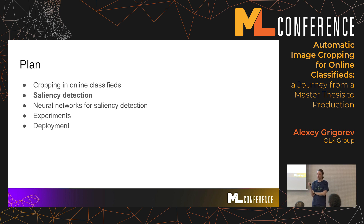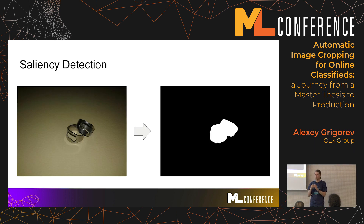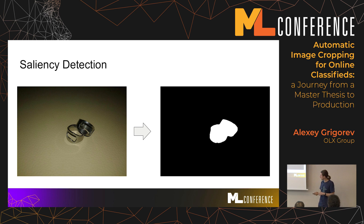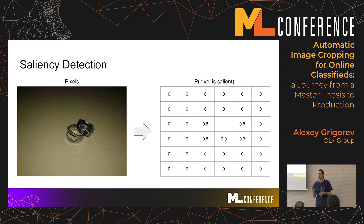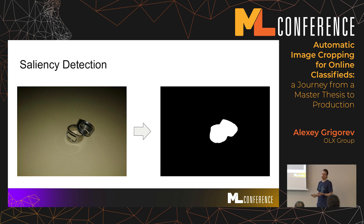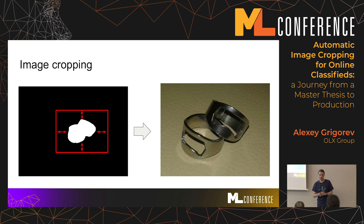To approach this, we can use saliency detection. Saliency is detecting the most important object in the picture — the salient object. In this case, we have engagement rings, and the output of the saliency detection system is a mask — actually, a probability for each pixel of whether it belongs to a salient object or not. We put in a picture and get out an array of probabilities. Then we can get the bounding box of the salient object, add some border to make it visually nicer, and then crop it.